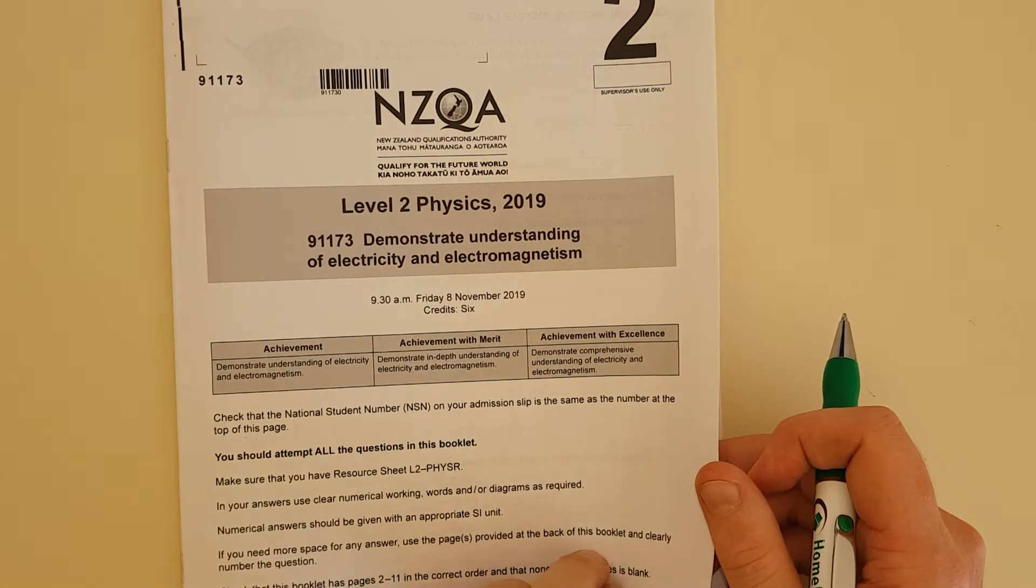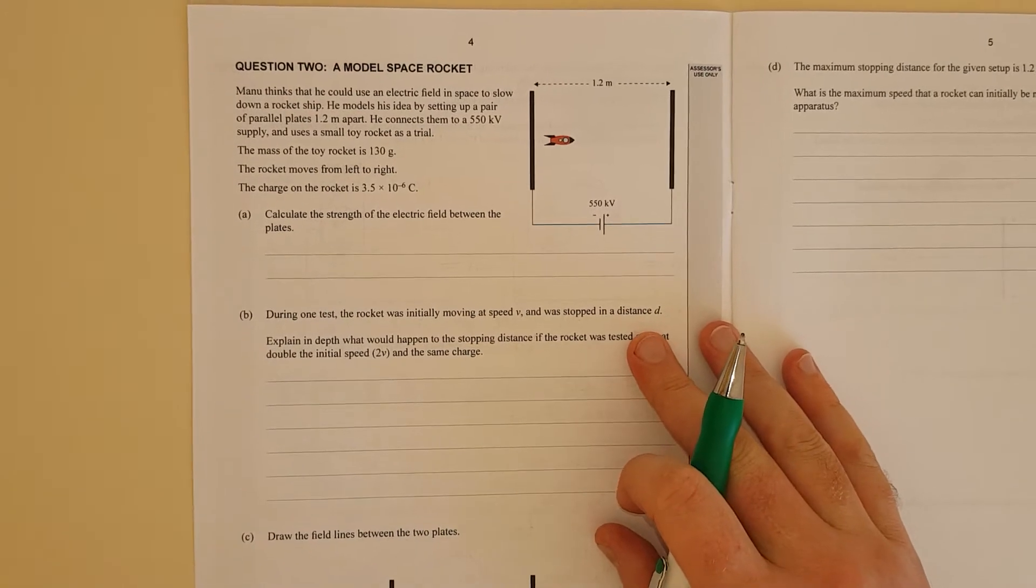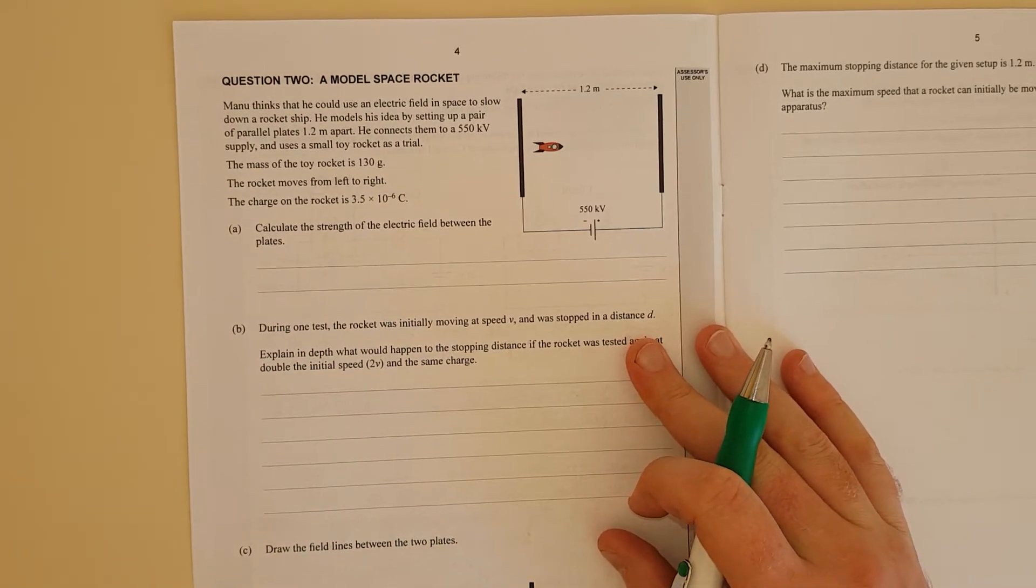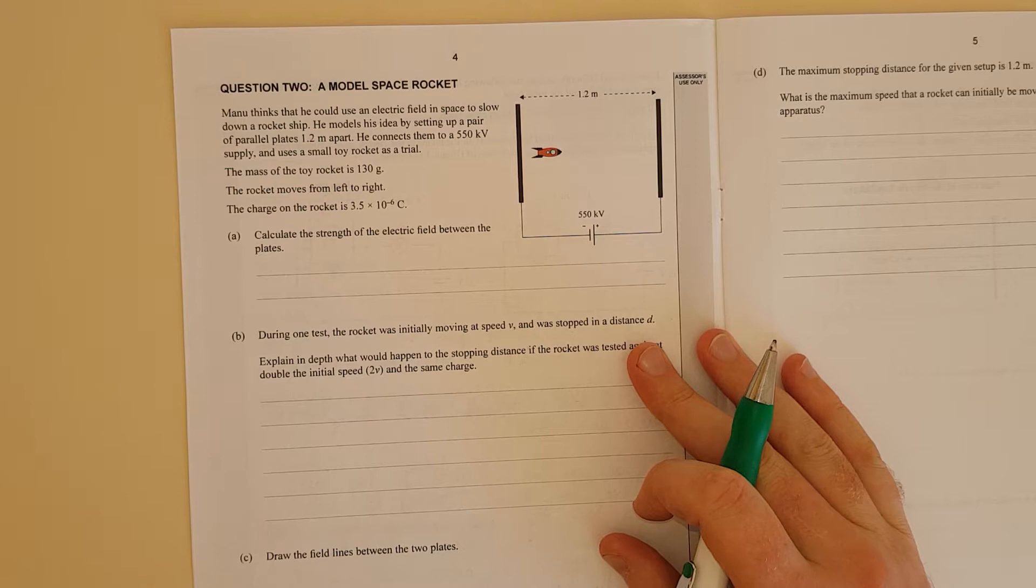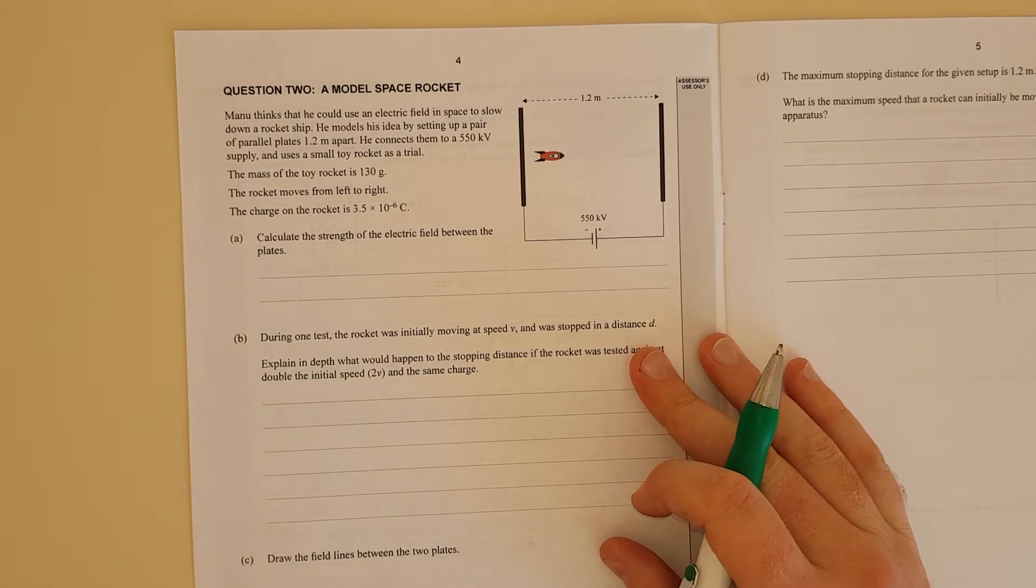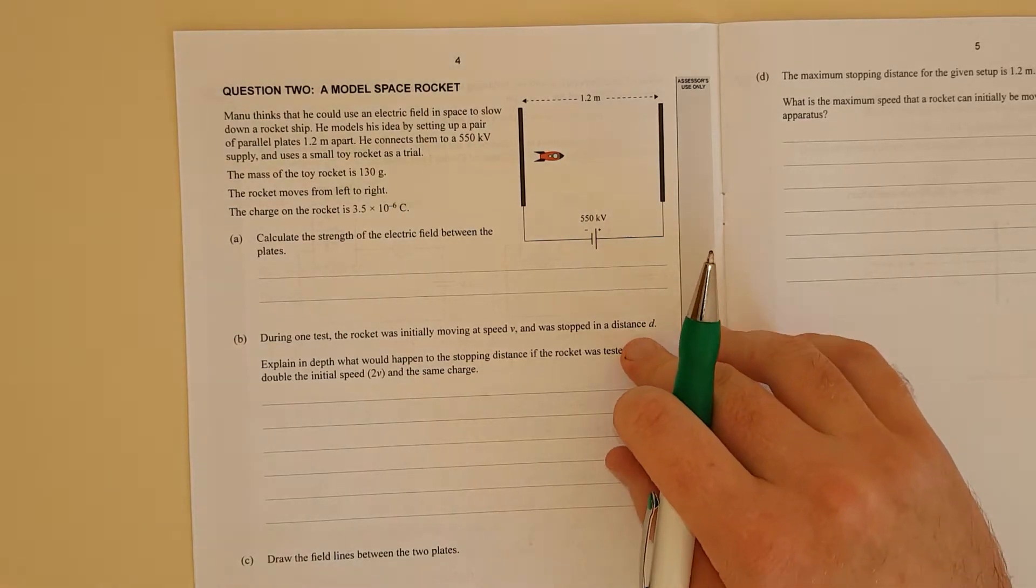This is question 2 of the 2019 level 2 electricity exam. Manu thinks that he could use an electric field in space to slow down a rocket ship. He models his idea by sending up a pair of parallel plates 1.2 meters apart. He connects them to a 550 kilovolt supply. Uses a small toy rocket as a trial.